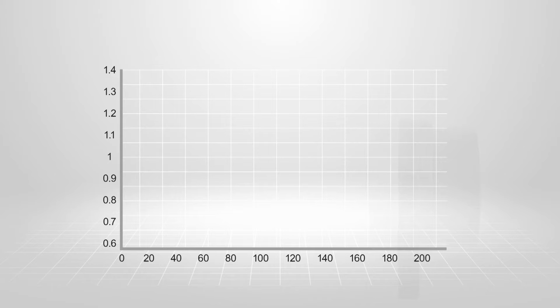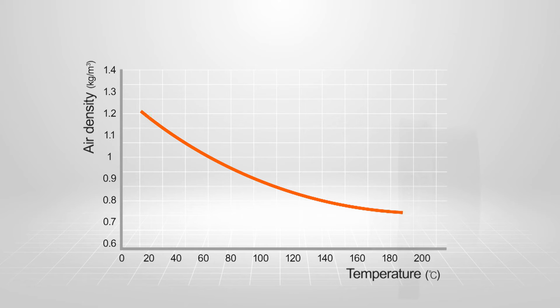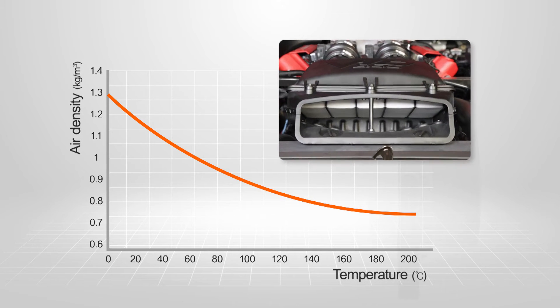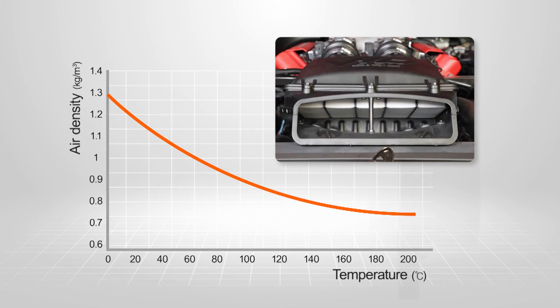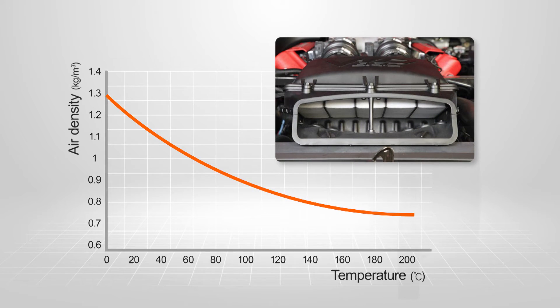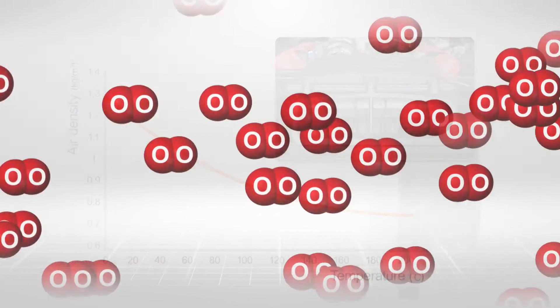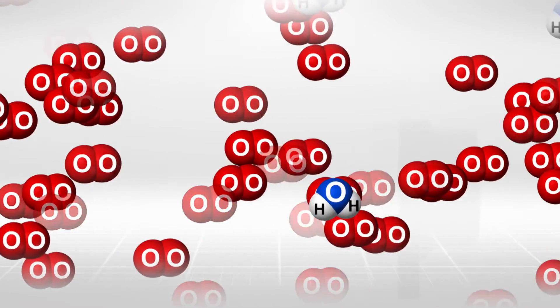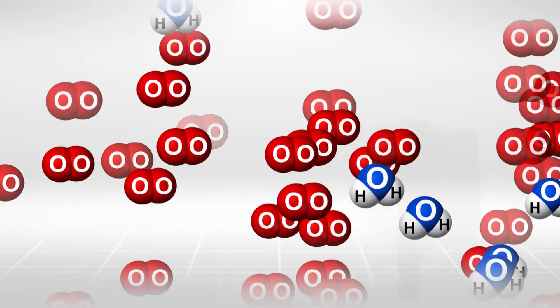The actual quantity of air for a given volume is affected by several key factors. The hotter the temperature the less dense the air. This is why many manufacturers have gone for cold air induction. Humidity or water vapour in the air takes up space thus leaving less air for a given volume.